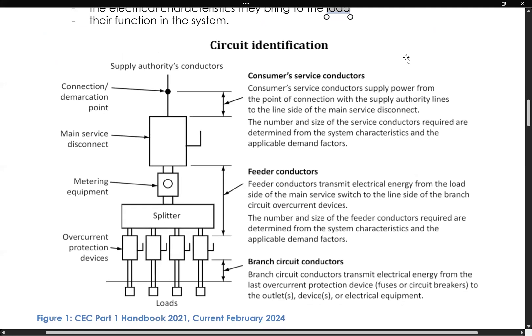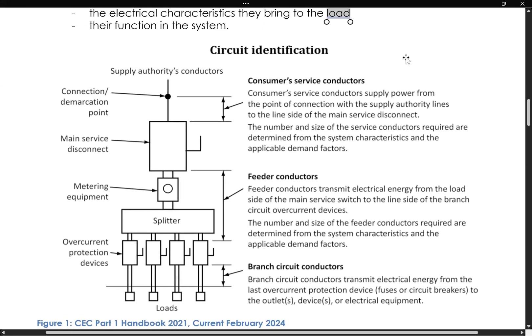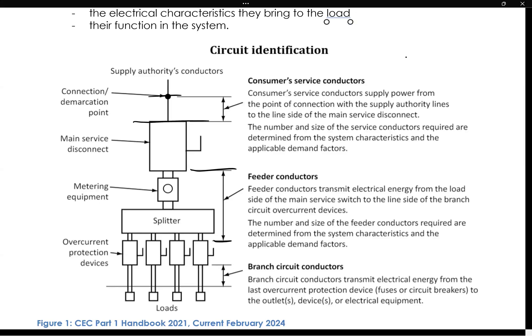And here's just an example of a typical circuit and what we would call our feeder conductors to be in this section here, that includes our metering equipment up to our overcurrent protection devices for our branch circuits, and the consumer service conductors to be from the demarcation point to that main service disconnect. And then feeder conductors in between, and then of course the branch circuit conductors are the ones that are going to take the energy from that last overcurrent protection device, our fuses or our circuit breakers, on to our outlets or our devices or our electrical equipment.